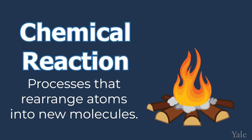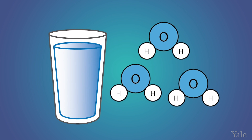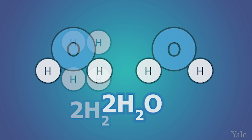We call transformations like this chemical reactions, and we can use chemical reactions to decompose some pure substances. For example, we could perform a chemical reaction on the H2O in our water glass. Instead of having one substance, water, where each molecule contains two hydrogen atoms and one oxygen atom, we can convert it into its two separate elements.